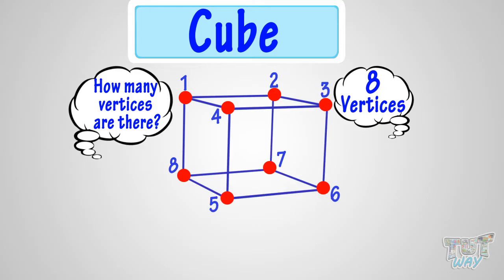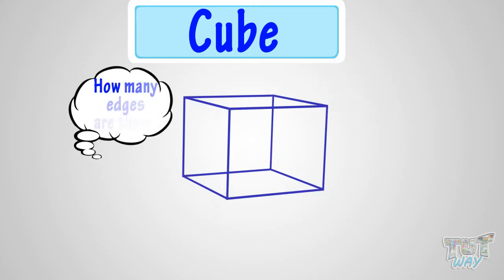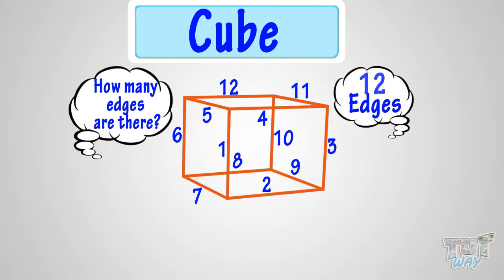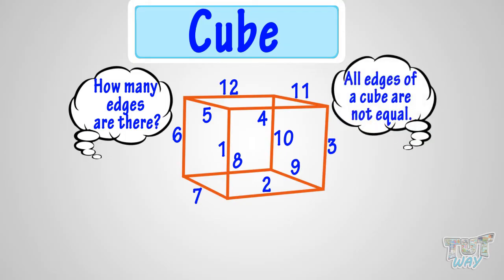Good! Now let's count its edges. 1, 2, 3, 4, 5, 6, 7, 8, 9, 10, 11, 12. So a cube has 12 edges. All are equal.